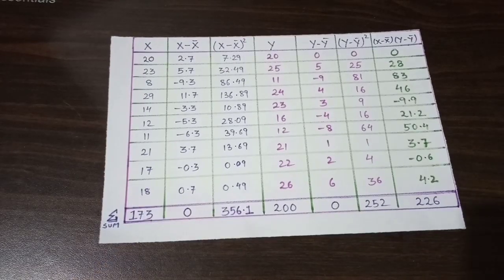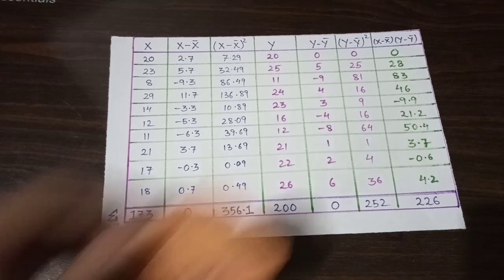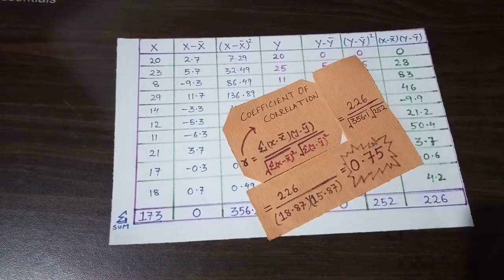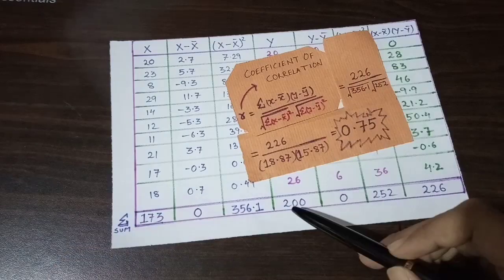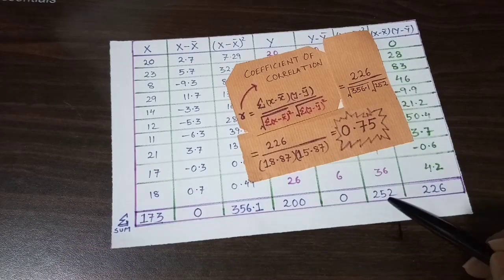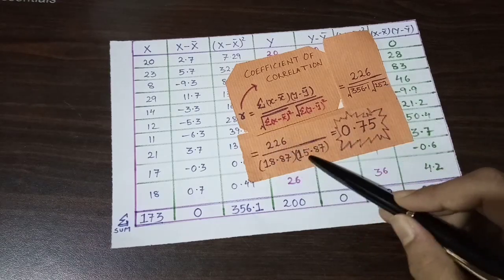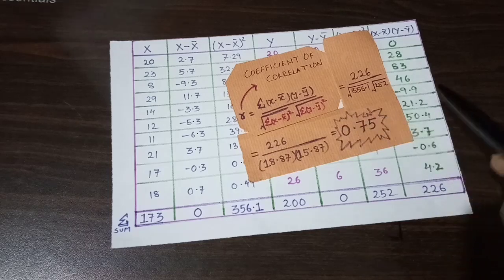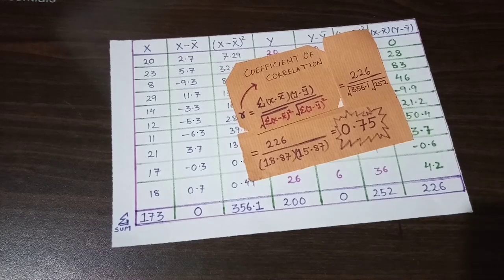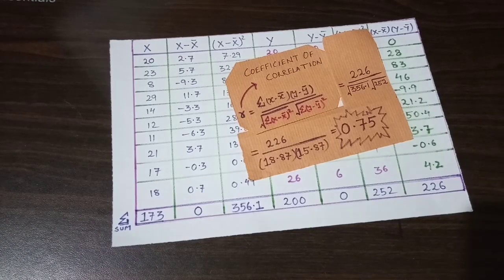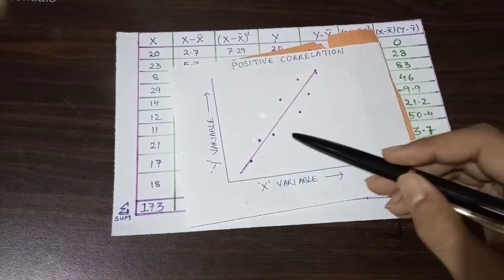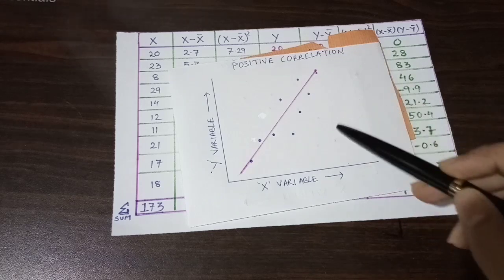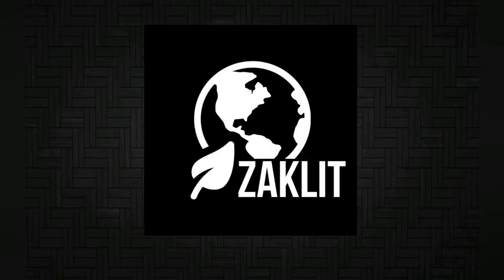After putting all the values into the formula, the numerator gives 226 and the denominator is the square root of 356.1 — the summation of (X minus X mean) squared — multiplied by the square root of 252, the summation of (Y minus Y mean) squared. After calculating all this, we get R equals 0.75. Since this value is close to plus 1, it indicates there is a positive correlation between the statistics and science marks scored by the students.